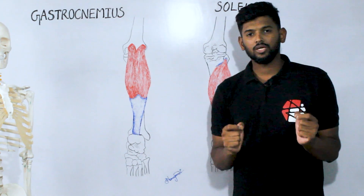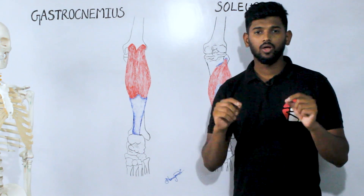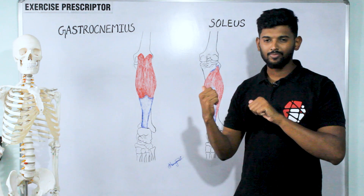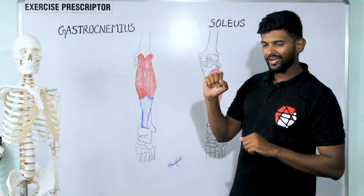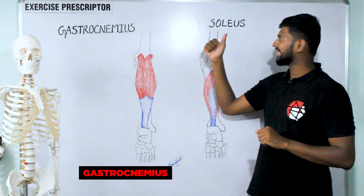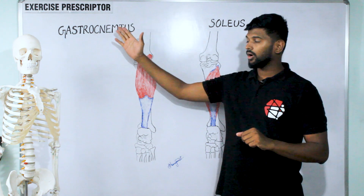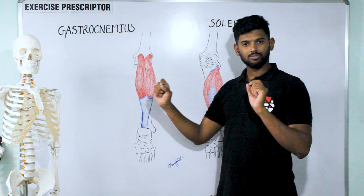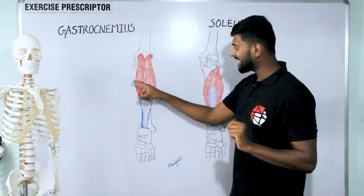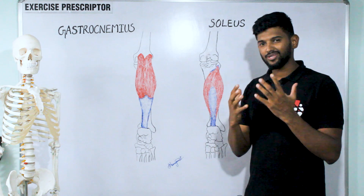Welcome to the scientific series on muscle. Today we're going to learn about the calf muscle — why this muscle is called gastrocnemius and soleus. This muscle is called gastrocnemius because it has a two-belly shape appearance. Belly means stomach — 'gastro' means stomach.